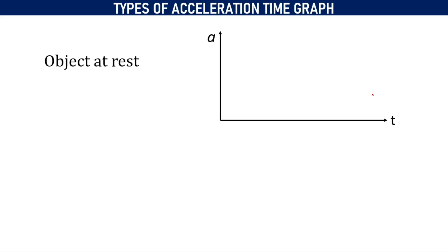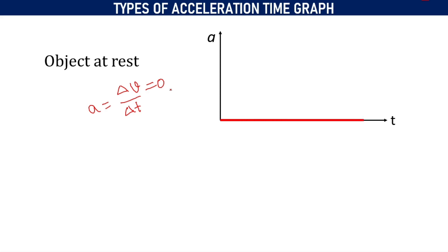Next, we are going to consider different types of acceleration-time graph. First, when the object is at rest, the change in velocity is equal to zero. The object itself is not moving. Therefore, change in velocity divided by time — which is represented as acceleration — should also be equal to zero. Hence, we will get a straight line which is coinciding with the time axis.